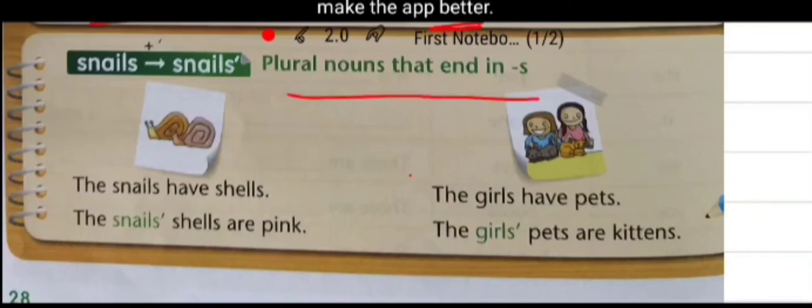According to this rule, in first example, we can see the snails' shells are pink. Here, snails is a plural noun, and we will put apostrophe after S. But we cannot use another S after this.